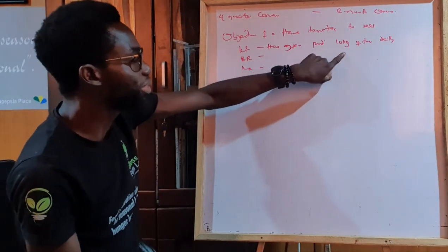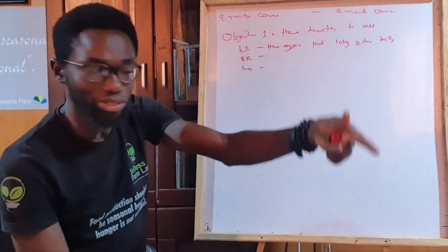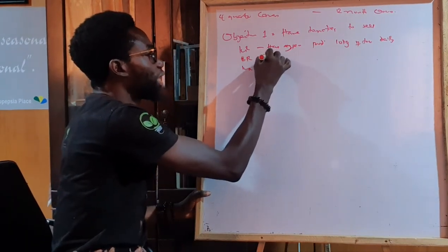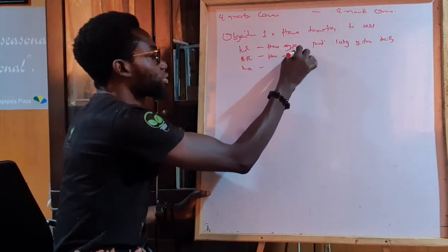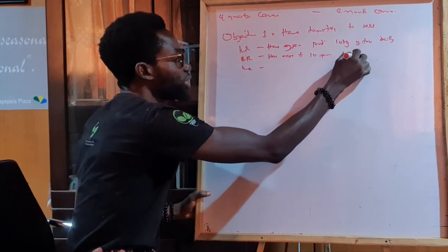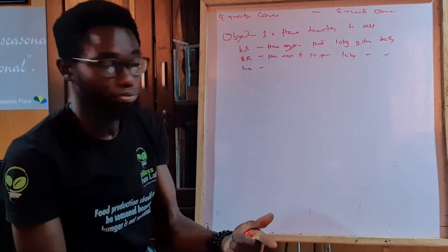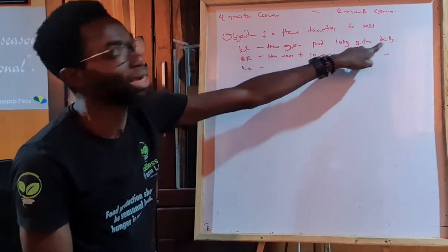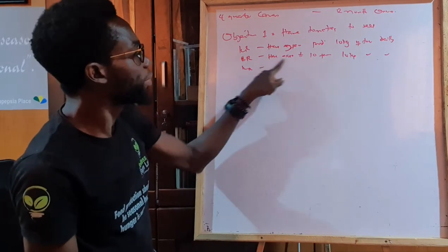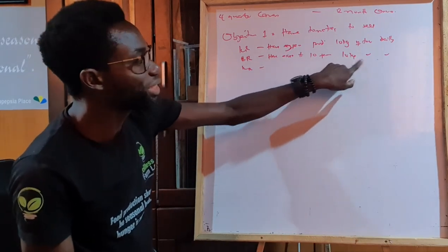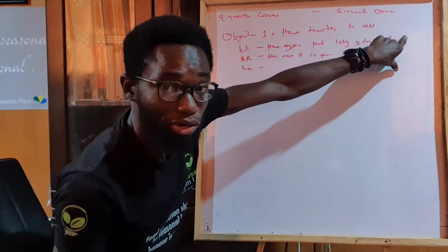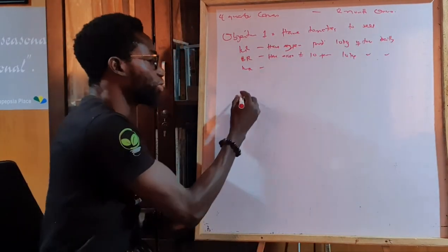My second key result could be: have access to 10 farms producing 10 kg of tomatoes daily. So first I have my own farm; second key result is I have 10 farms producing 10 kg. But to be sure that what I am calculating is correct, remember that the goal is to make 24 million naira.